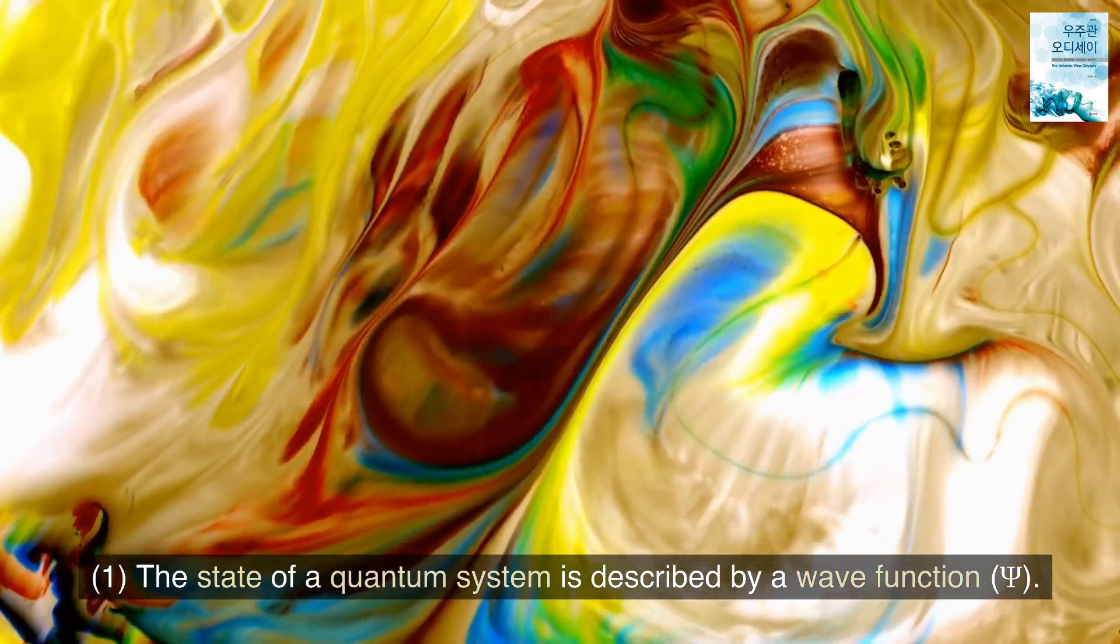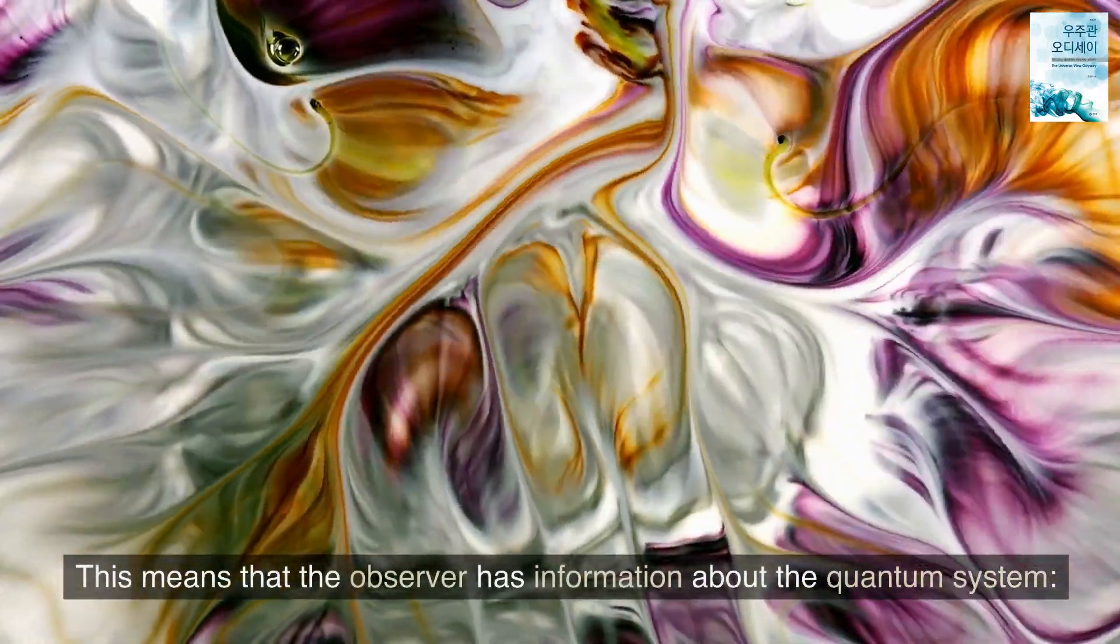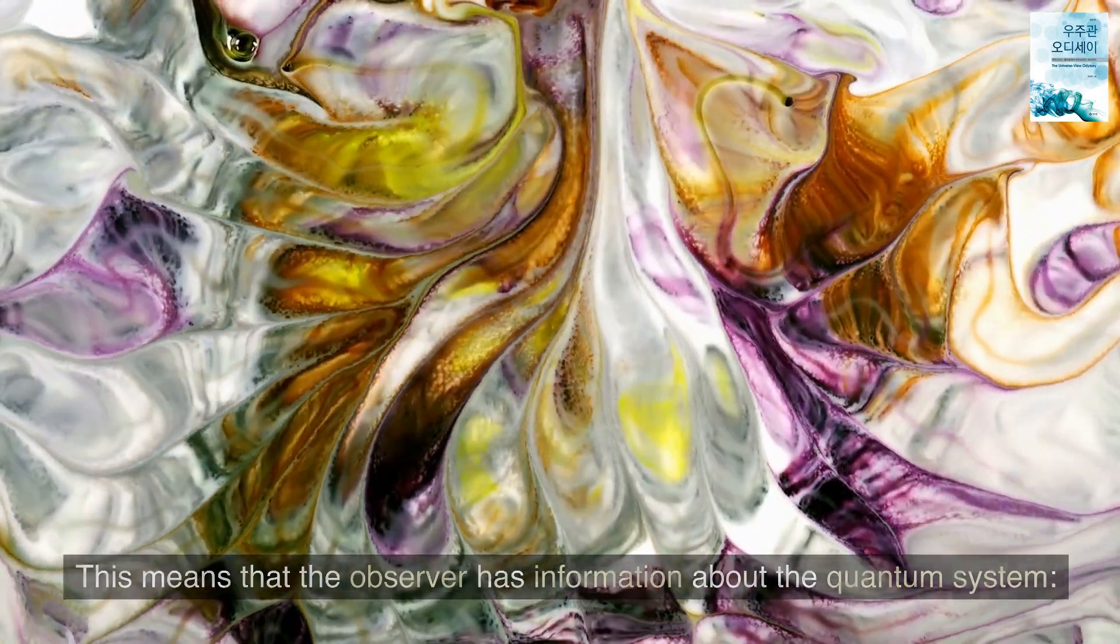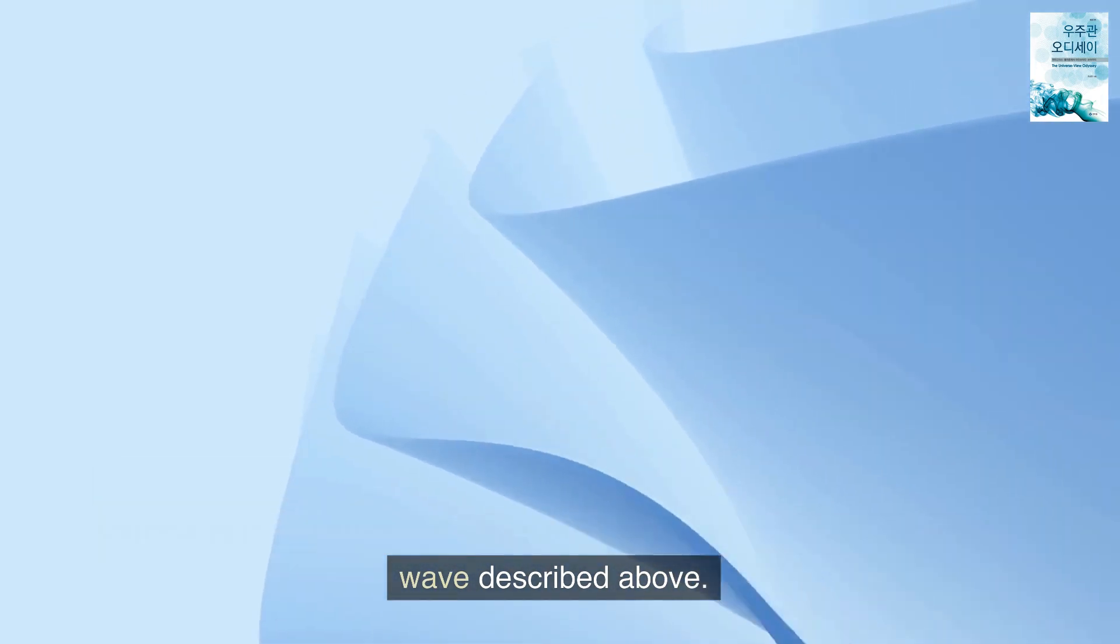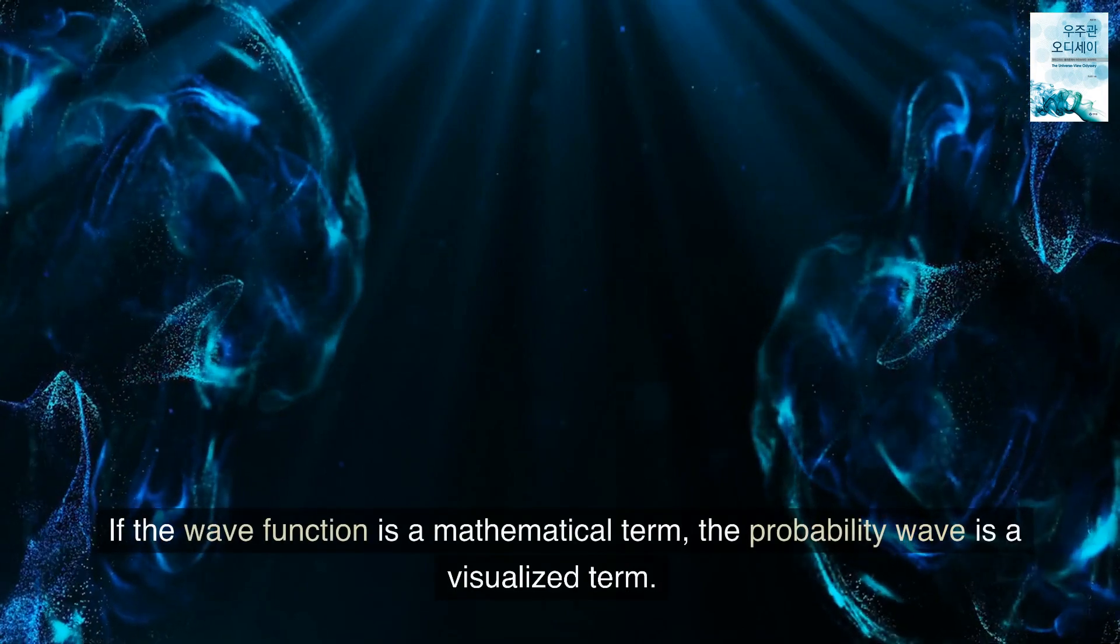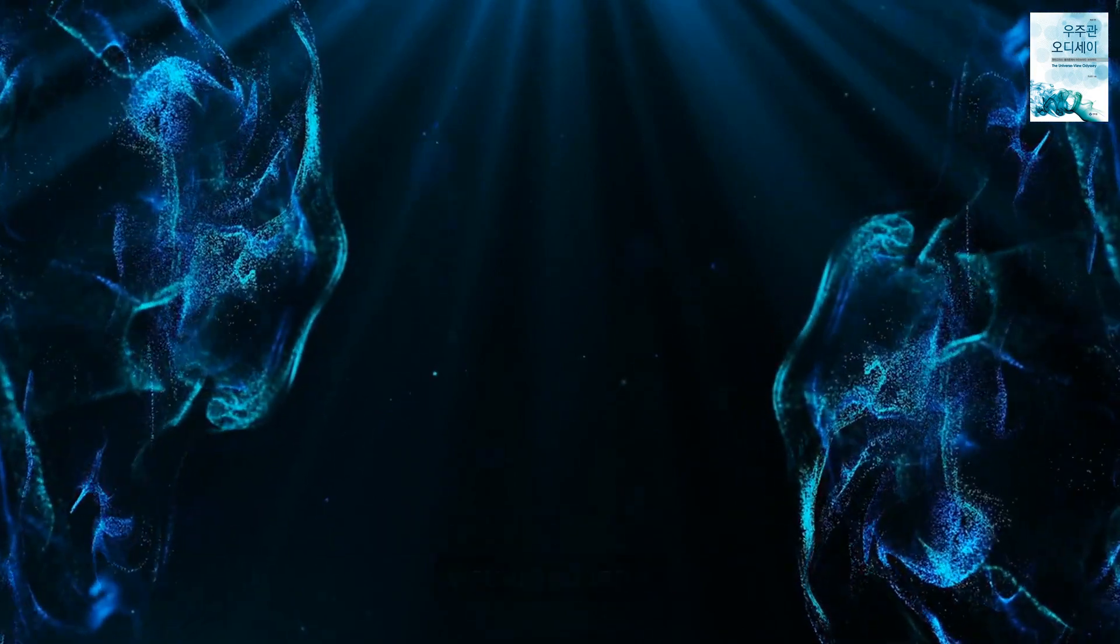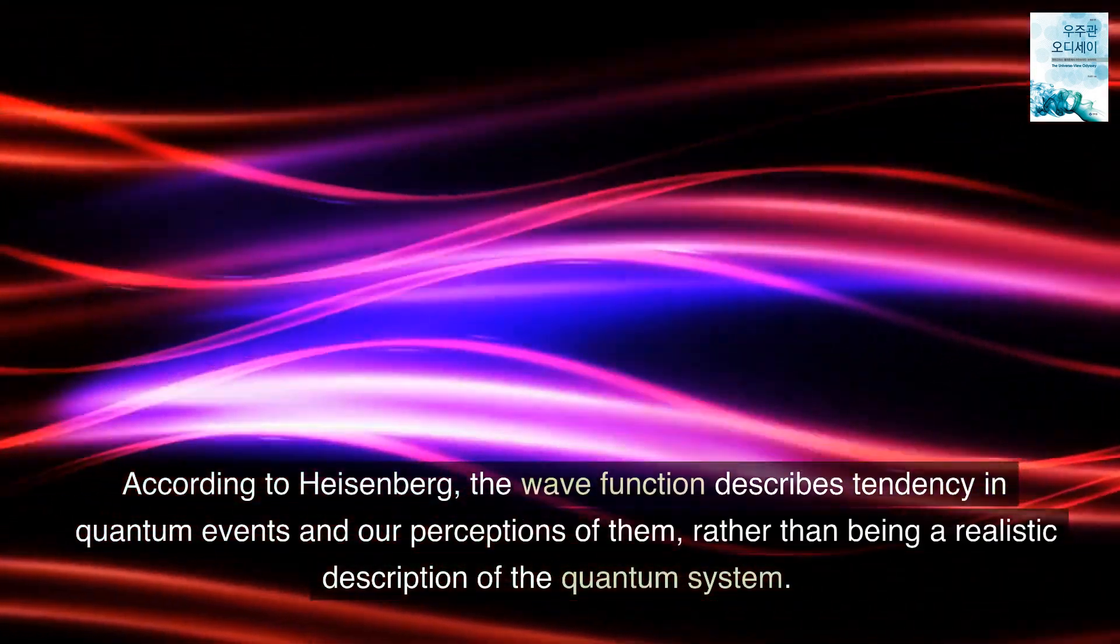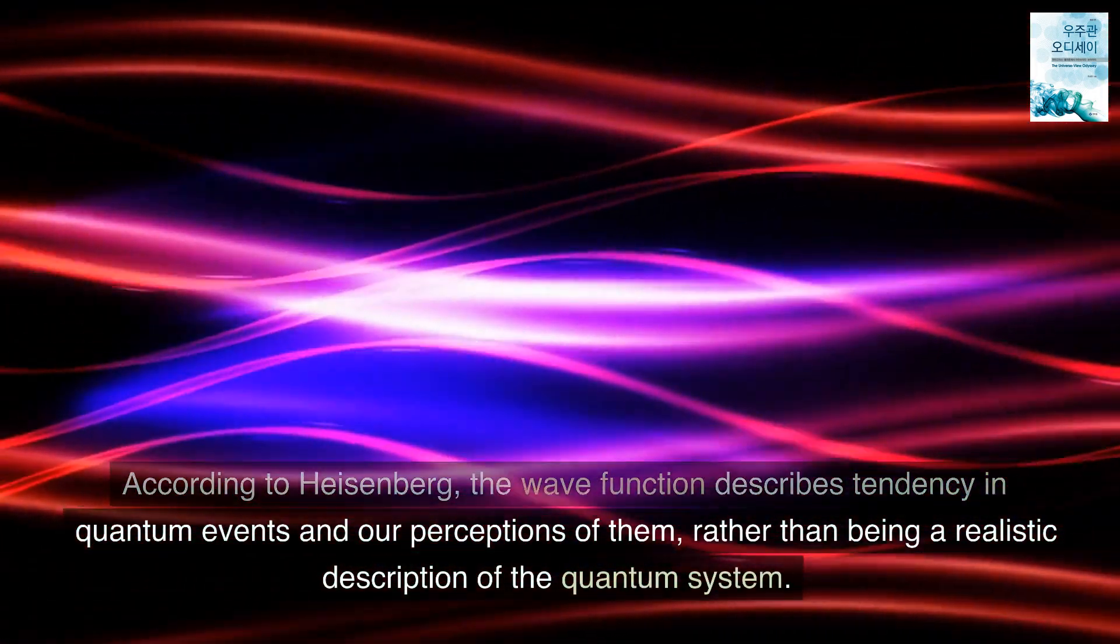1. The state of a quantum system is described by a wave function, psi. This means that the observer has information about the quantum system. The wave function that describes the state of a quantum system as a solution to the Schrödinger equation is another name for the probability wave described above. If the wave function is a mathematical term, the probability wave is a visualized term. According to Heisenberg, the wave function describes tendency in quantum events and our perceptions of them, rather than being a realistic description of the quantum system.